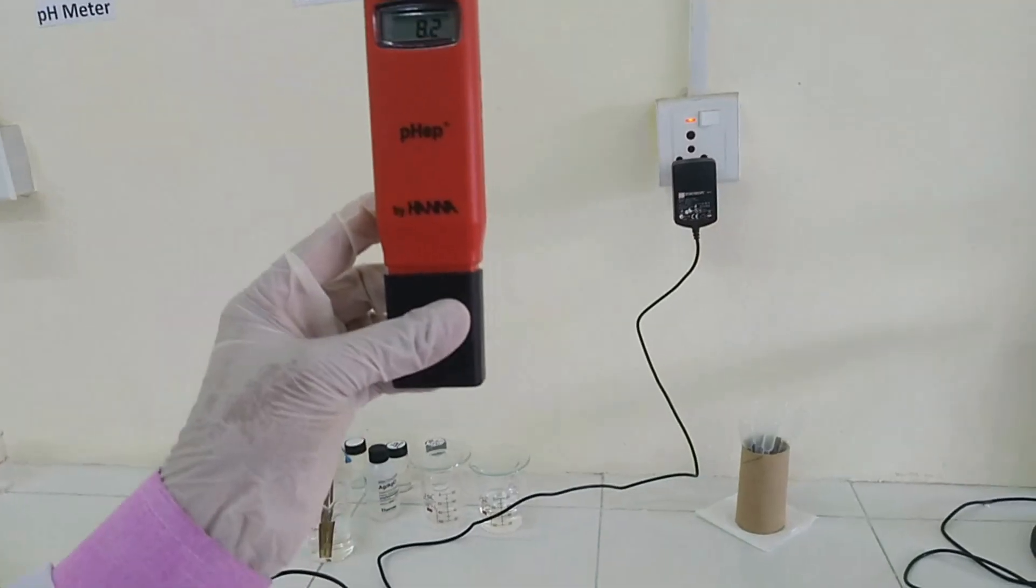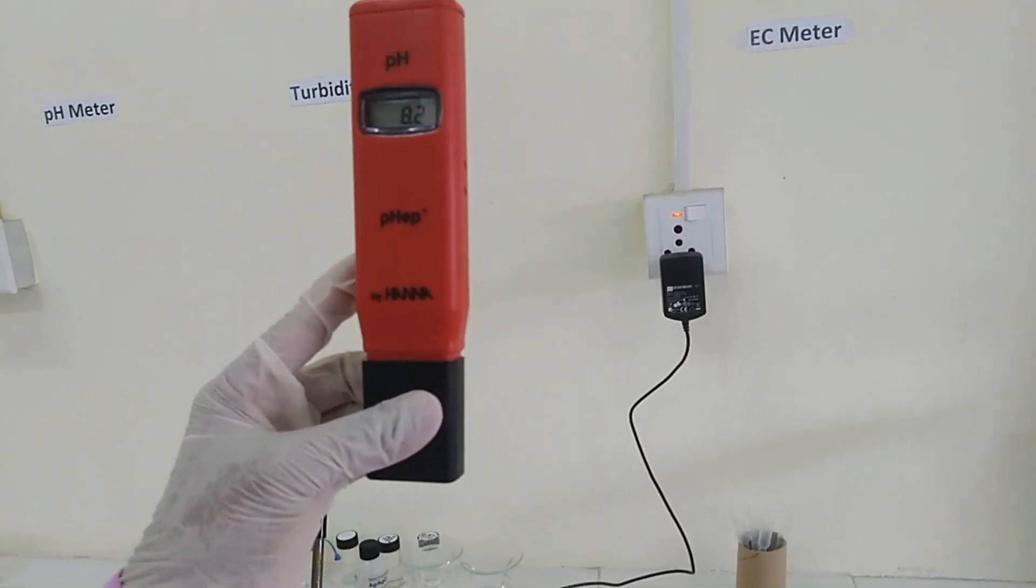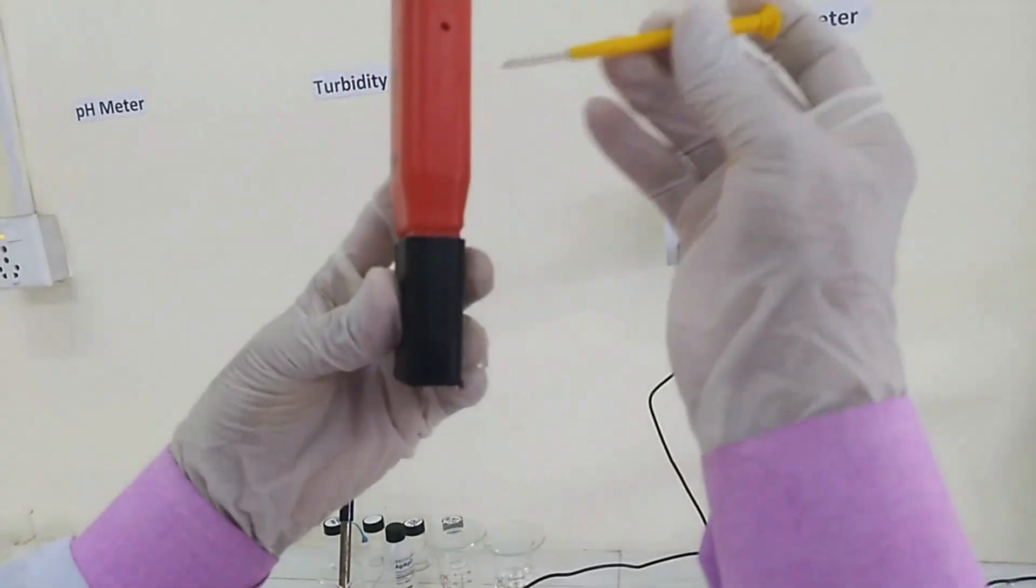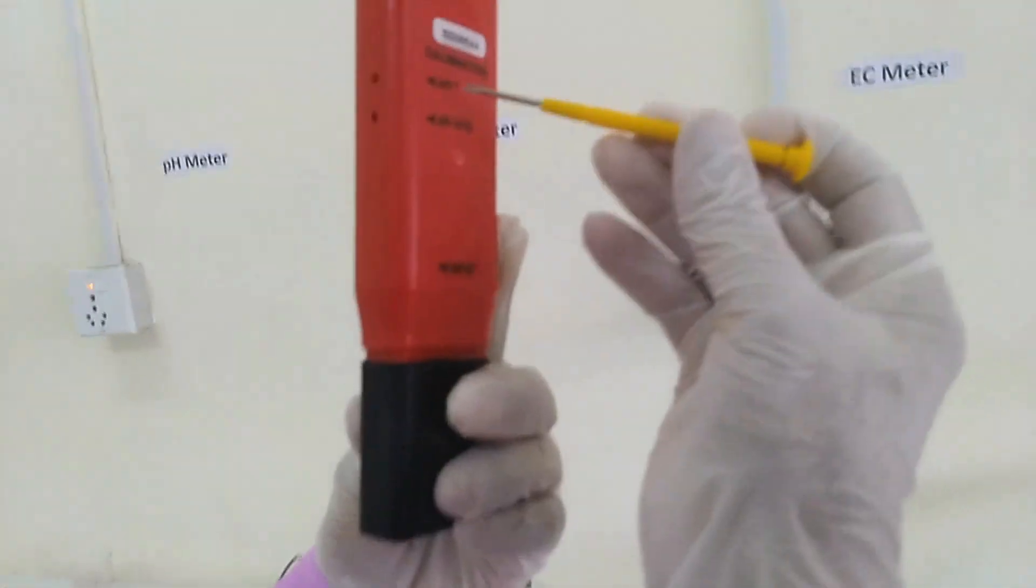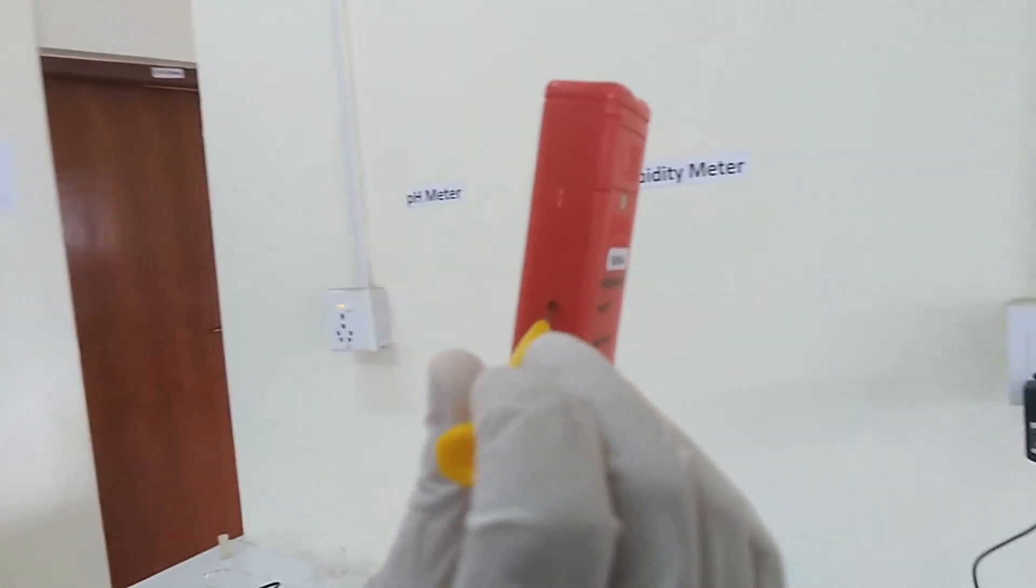See the reading. Wait for stable value. Insert screwdriver to the hole corresponding to pH 7.01 and slowly rotate the screwdriver clockwise to increase the value and anticlockwise to decrease and make the value 7.0.